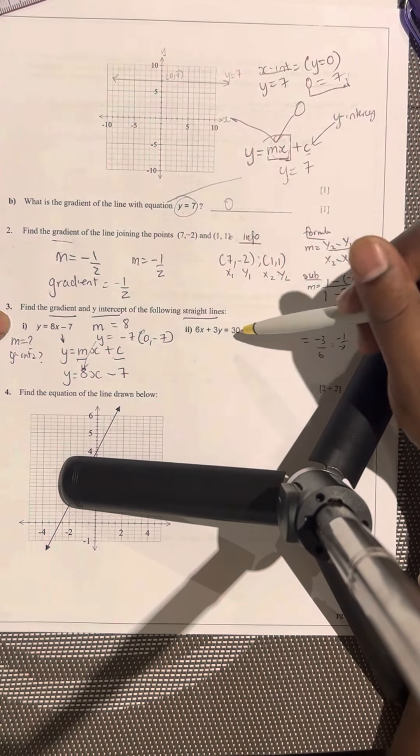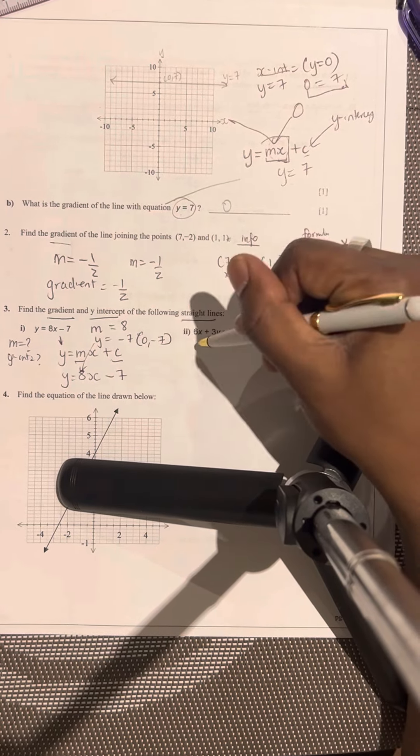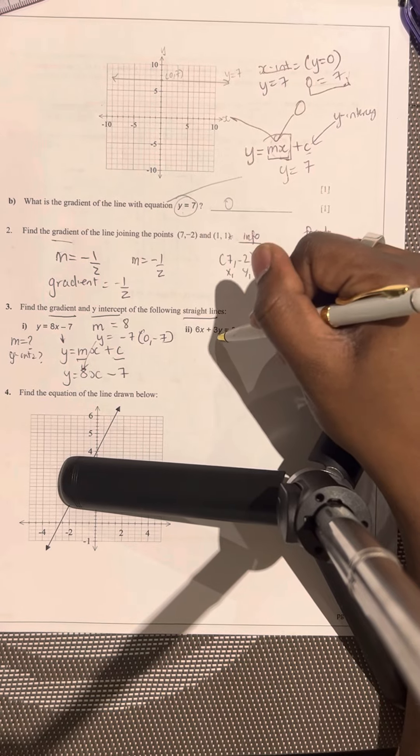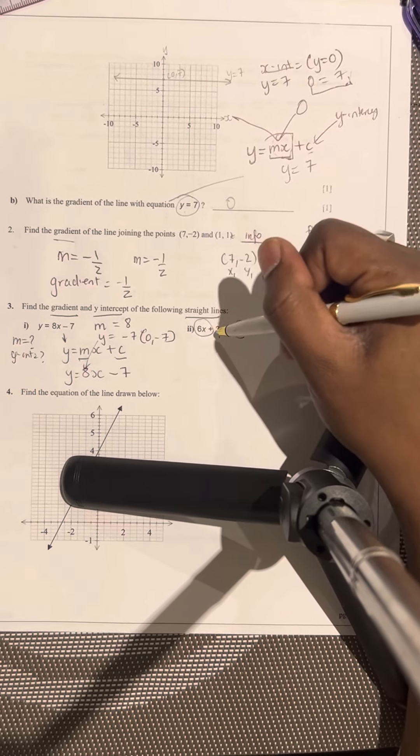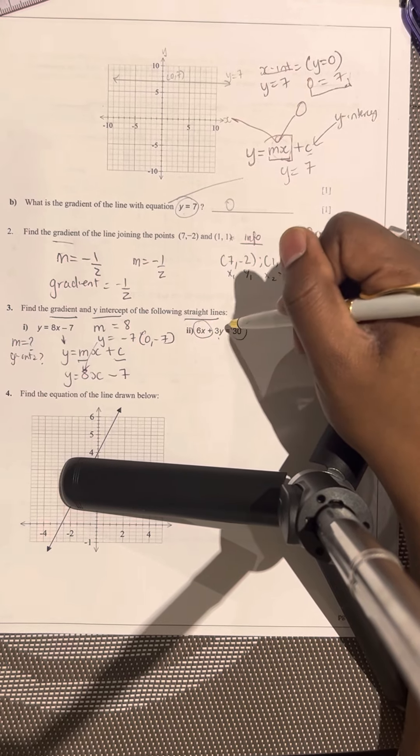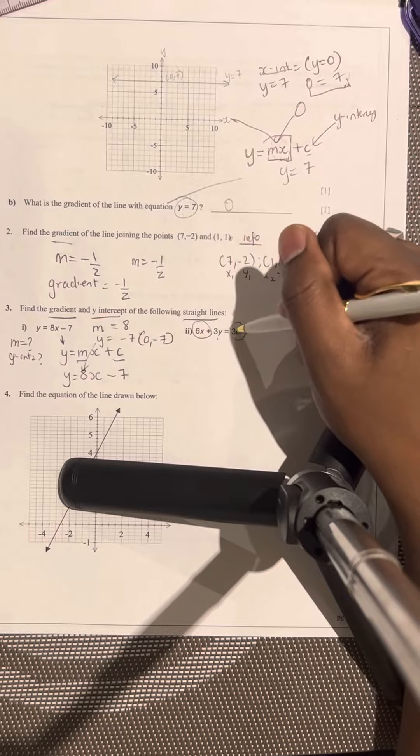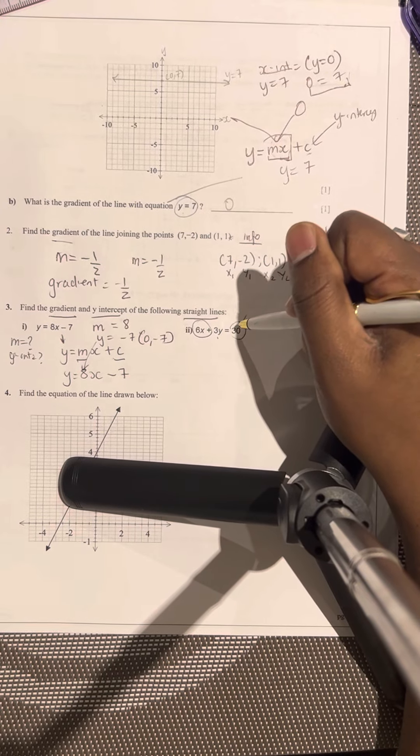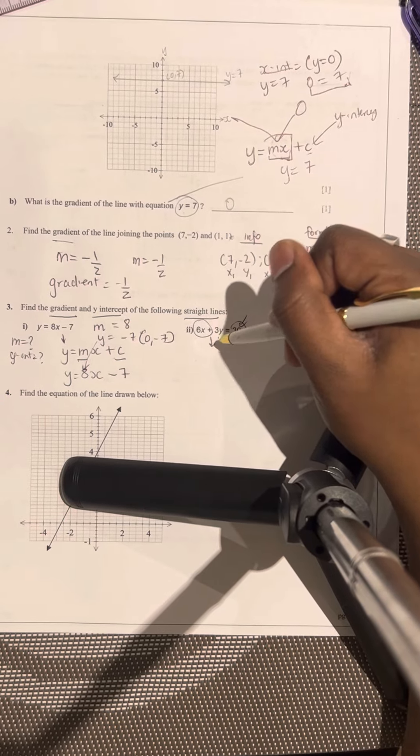Question part two of three. Okay, it says find the gradient and the y-intercept. So some people might go, oh cool, that's the y-intercept and that's the gradient, right? Because you've got y equals mx plus c and you're like, oh cool, m is the 6, right? And this is going to be the y-intercept. No, you're wrong. Okay, you've got to think about this through.